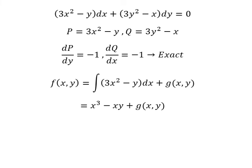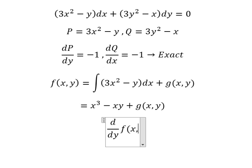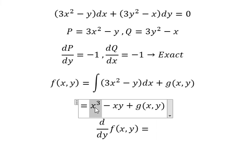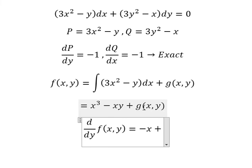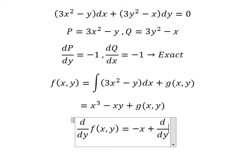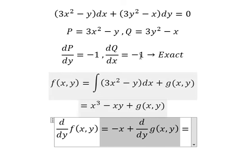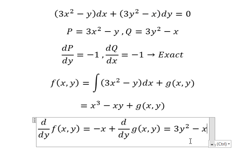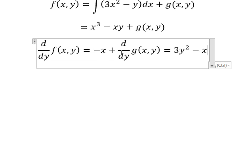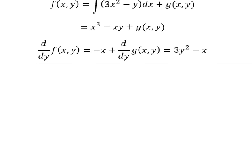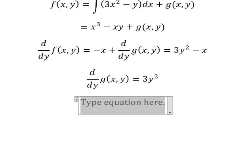Next, we need to do the first derivative of F with respect to y. This part doesn't have y, so you get zero. This part has y, so we get number one, and that gives us negative x. We also put d/dy of g(y) here. We know that this equals the expression on the other side, so we simplify negative x from both sides.